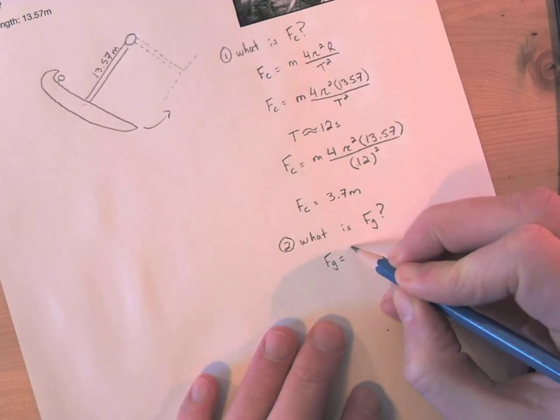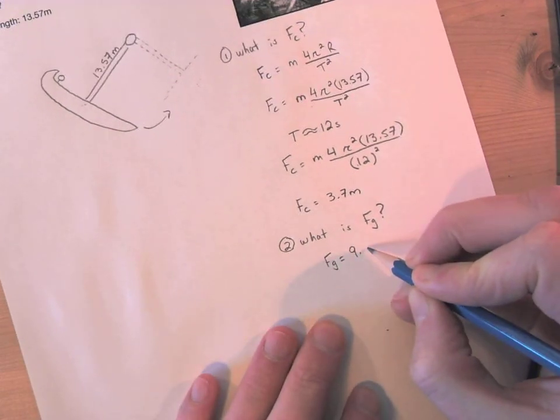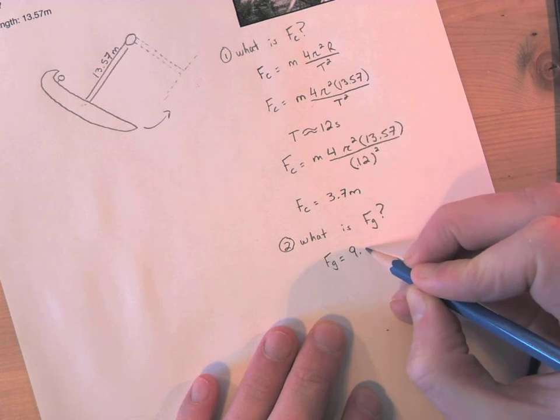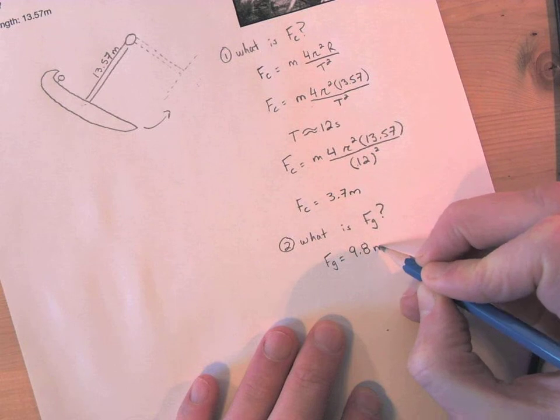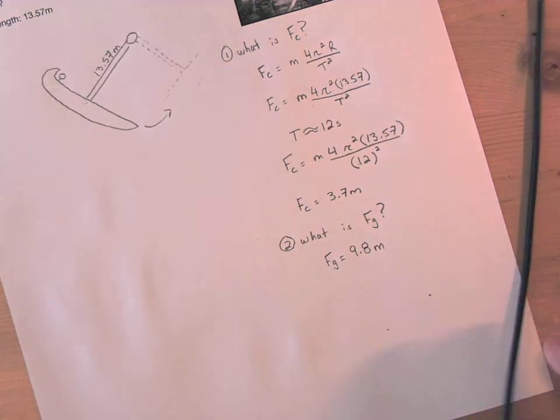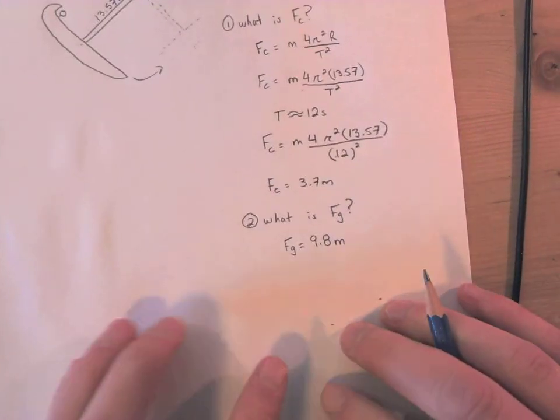FG, what is it again? It's just 9.8. I'm not going to go 9.81. 9.8 is probably not a very good one either because there's air friction, so I'm just going to stop there, 9.8 times your mass.